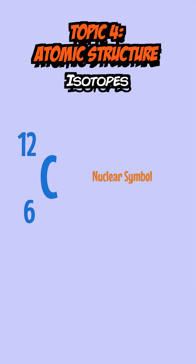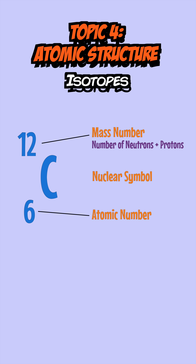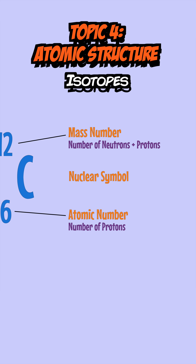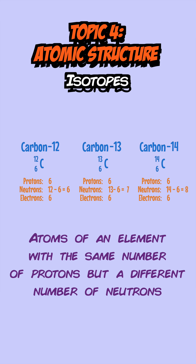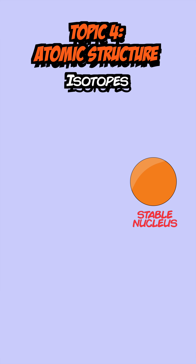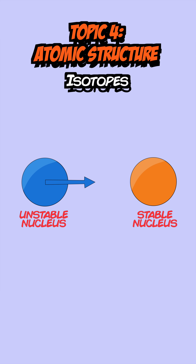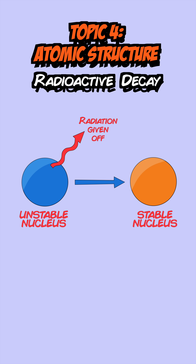Nuclear symbols for elements show you the mass number, which gives the number of protons and neutrons, and the atomic number, which gives the number of protons. Isotopes are atoms of an element with the same number of protons but a different number of neutrons. Some isotopes are stable, but others are unstable and become stable by giving off radiation — this is known as radioactive decay, and it's a random process.